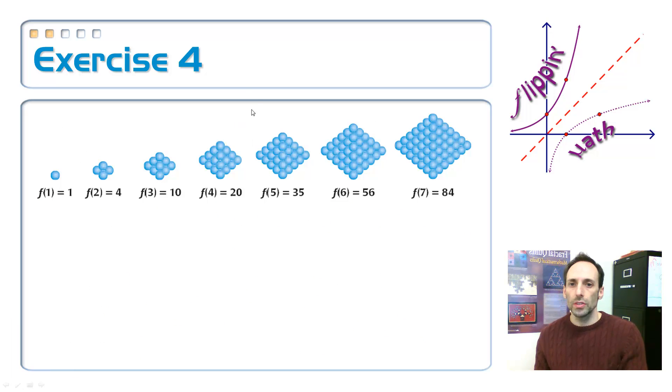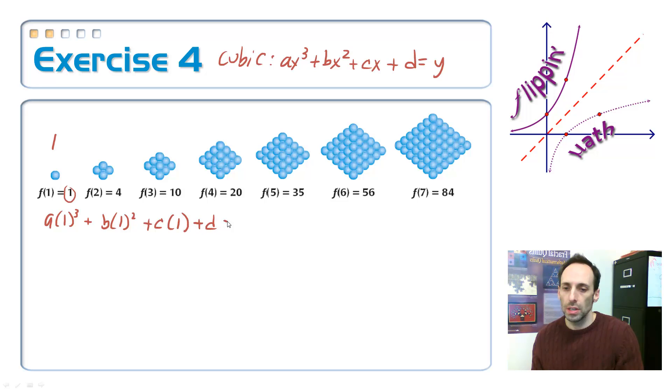Since this is cubic, I'm going to write my equation like this: ax cubed plus bx squared plus cx plus d. All of this is equal to y. The reason why I'm putting the y last is because that's how I'm going to insert this into the matrix. For the first one, I'm going to stick in 1 for x, and what should come out is 1 for y. So a times 1 cubed plus b times 1 squared plus c times 1 plus d. All of this is equal to 1 for the y value. So this equation becomes a plus b plus c plus d is equal to 1.